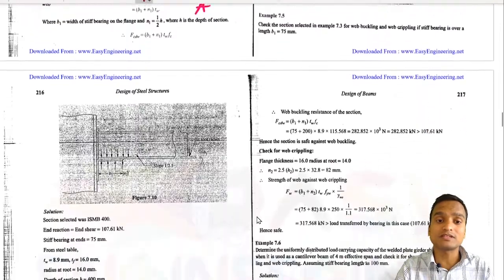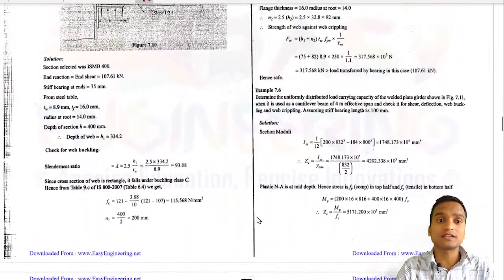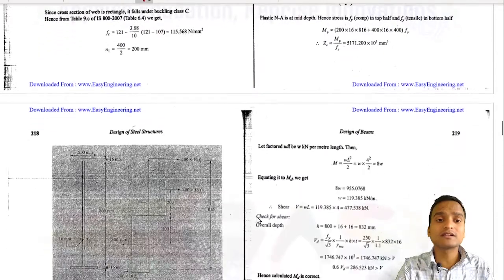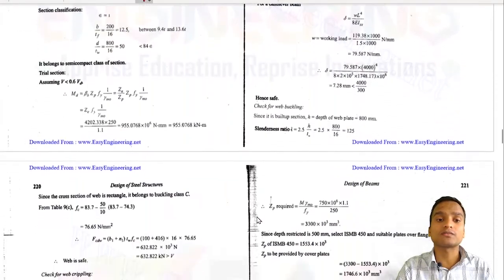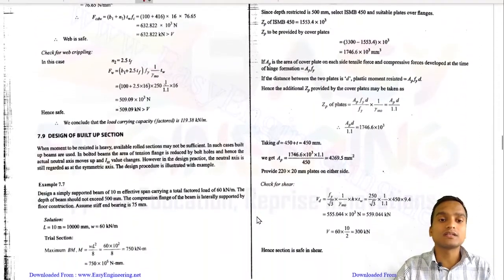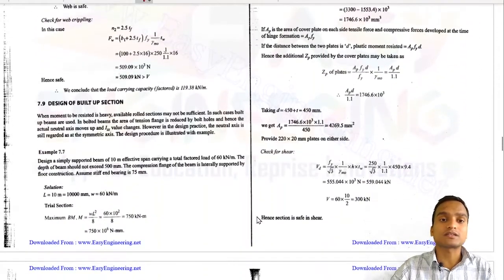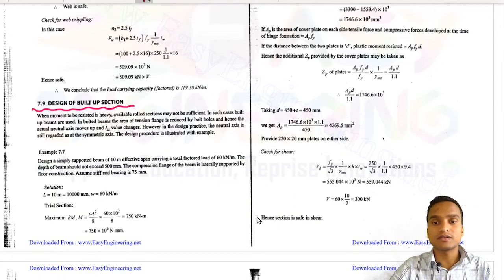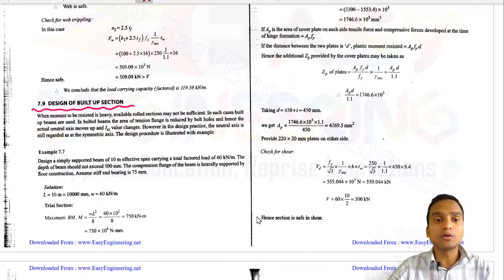We have not discussed entirely the design for web buckling and web crippling strength since the scope would become very much out of the syllabus. That's why we limit ourselves. Design of built-up beams can be done and everything is given in the textbook where you can see how these built-up beams are made.